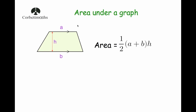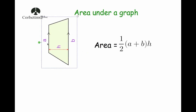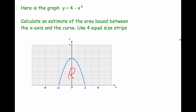One thing to note is that whenever we find the area under a graph, the trapezia will often be on their side. What we'll be doing is adding together the two parallel sides — which will be the two vertical lines — halving that, and then multiplying by the height, which is the distance between those two parallel lines.